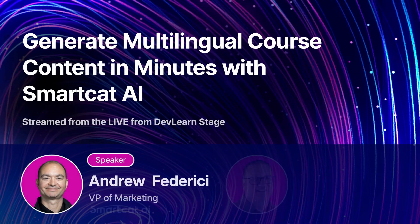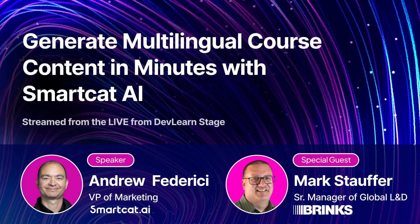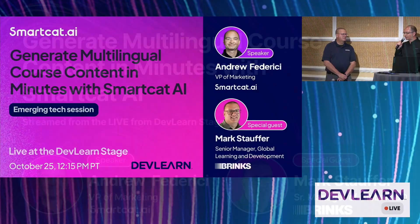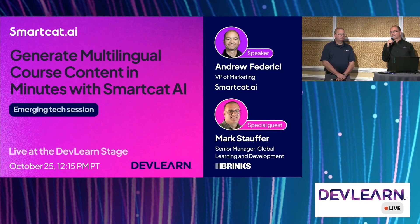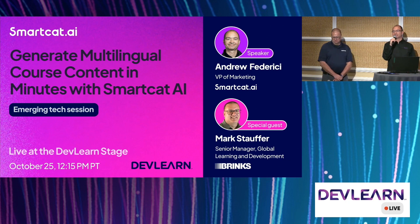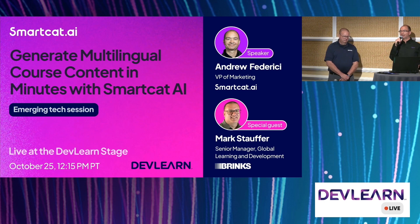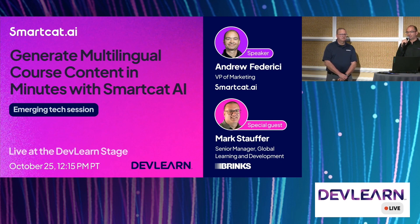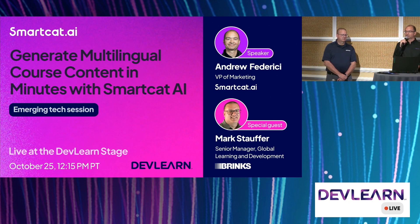We have two parts to this session. First, you're going to hear from Mark about his experience working with multilingual course content before and after working with SmartCat. Second, we're going to show a demonstration of three things: how to use SmartCat AI to generate multilingual content for your courses, how to translate that into any of our 250 languages, and my voice in French using SmartCat AI to present some of this demo.